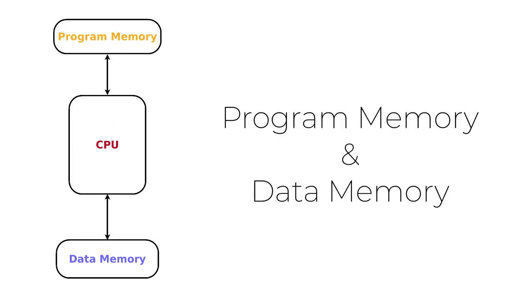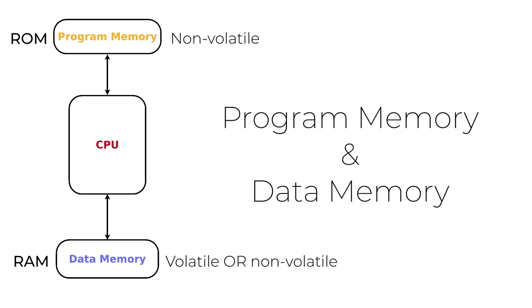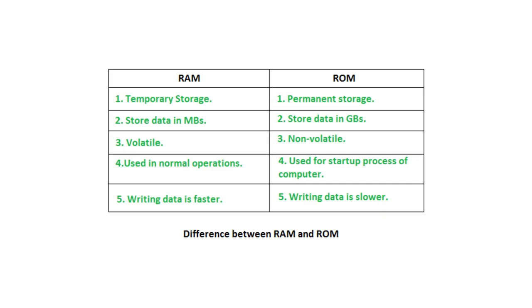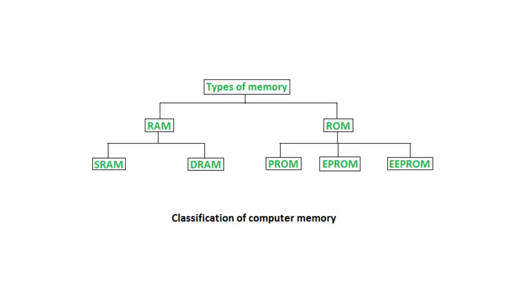Memory used in a microcontroller can be divided into two main types: program memory and data memory. Program memory is non-volatile, meaning it retains data even after power is removed, like flash memory. Data memory can be either volatile like RAM, or non-volatile like EEPROM. We have different types of RAM and ROM available for our MCU — some are better than others and some are even deprecated now. Have a look at the different types of memory used within an MCU.